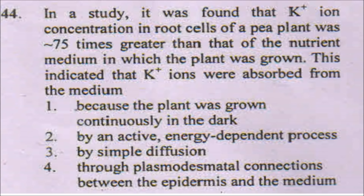The next question states: in a study, potassium ion concentration in root cells of a pea plant was approximately 75 times greater than that of the nutrient media. If the root is already having a very high concentration of potassium ions, it is not possible for potassium to be absorbed passively. It will only be possible when an external force pulls the potassium ions into the root — this is known as active transport, which is an energy-dependent process. So the answer will be by an active, energy-dependent process.